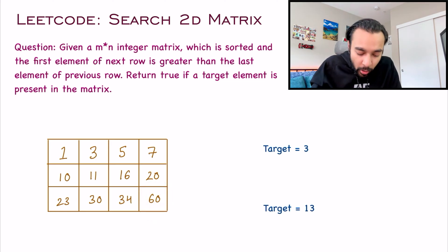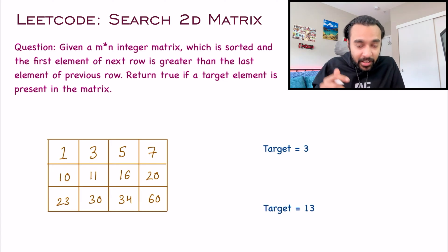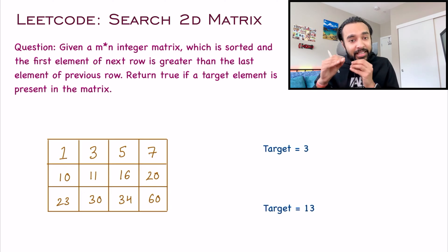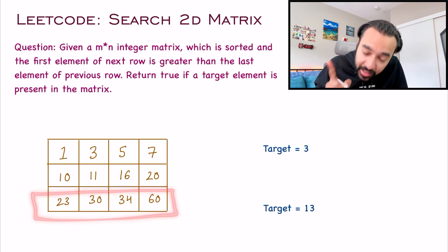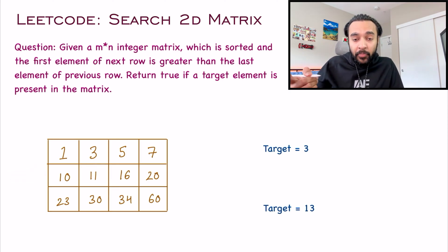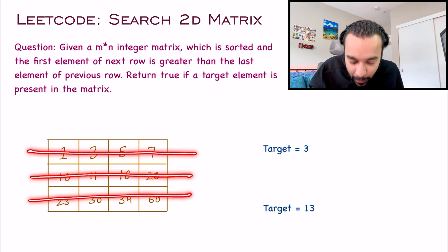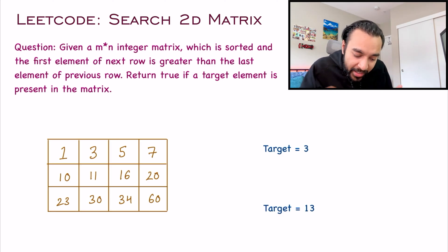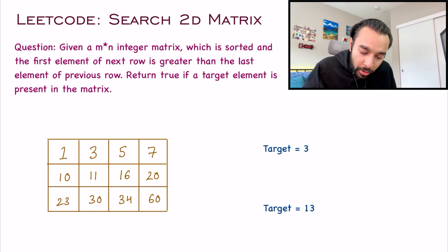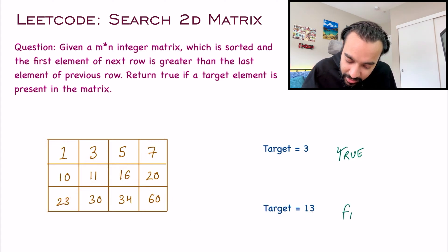There is one more condition: the first element of every row is greater than the last element of your previous row. So this gives you a very big hint — it tells you that if you are at row 2, then surely all of these elements will be greater than all the elements in your previous row. Technically, if you are going from the least element to the greatest element, you will traverse your array in this manner. Once this array is defined, you are asked: can you find a target 3 or can you find the target 13? You can find 3 — so you return true in your first test case. You cannot find 13 anywhere, so for the second test case you simply return false.